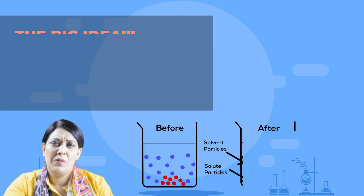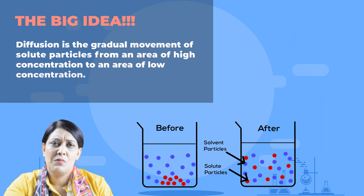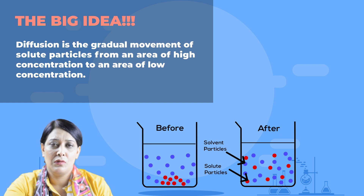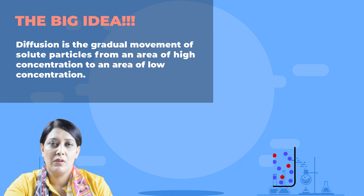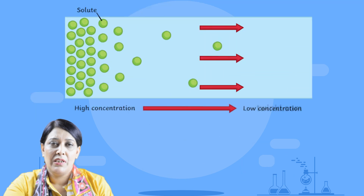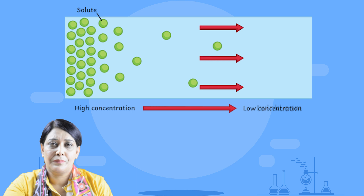Here is the big idea: diffusion is a gradual movement of solute particles from an area of high concentration to an area of low concentration. Please pay attention to the diffusion process diagram.